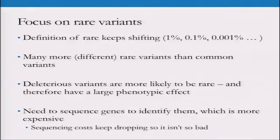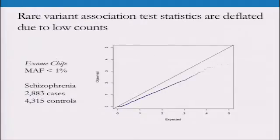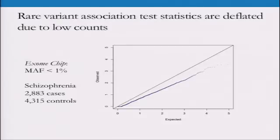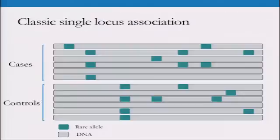Unfortunately, when you use all of those tools for common variant association tests, you get a QQ plot that looks deflated — which is kind of sad. The expected test statistics are on the X, the observed on the Y. If it follows the null it's supposed to follow the line, but this is below the line. The p-values we're seeing are not even what we expect — it's deflated. The reason is we don't have enough counts. This is real data from schizophrenia with a similar number of cases and controls, with minor allele frequency of 1% or less. The big issue: classic single-locus association does not work.